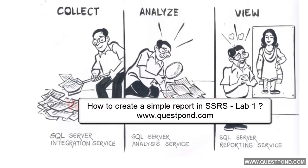Till now we have seen how we can use SQL Server Integration Service to collect data from various sources like Excel, CSV, SQL Server, Oracle etc., and dump this data into a centralized database like a Data Warehouse. Then we saw how we can use SQL Server Analysis Service to create a cube, giving us a multi-dimensional view of the data. Now we are on the final phase where we use SQL Server Reporting Service to display this analyzed data — collecting with SSIS, analyzing with SSAS, and displaying with SSRS.